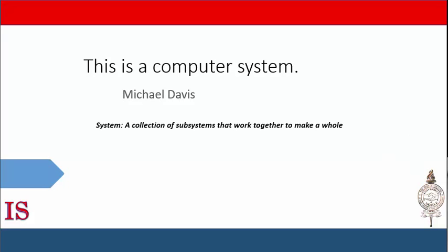The definition of a system is that it is a collection of subsystems that work together to make a whole. Subsystems work together to produce a product or perform some function.